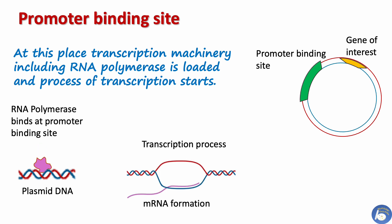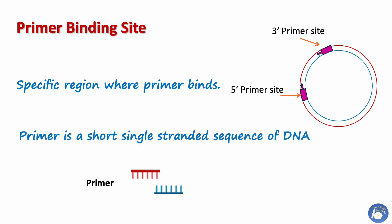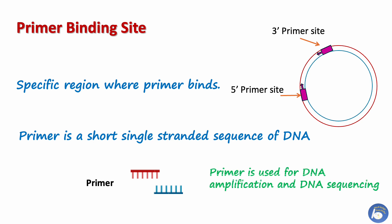The primer binding site is a specific site on the plasmid where a primer binds. A primer is a short single-stranded sequence of DNA mainly used for the purpose of DNA amplification and DNA sequencing.